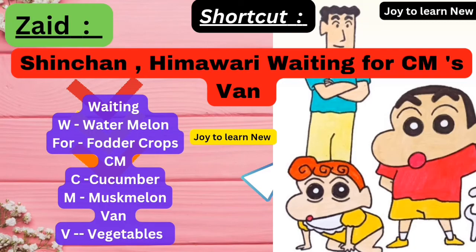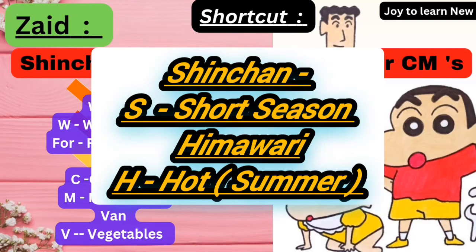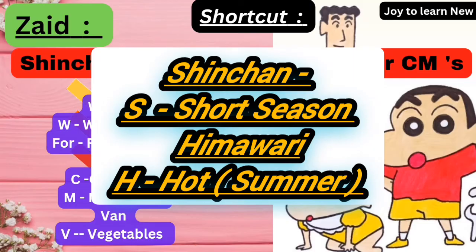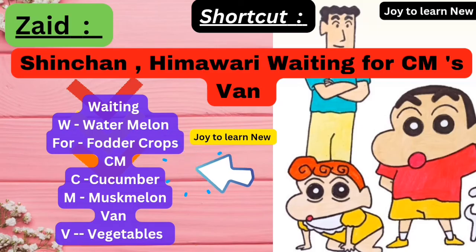Let's discuss about Zaid season. It is simple — remember the sentence 'Chinchang and Himawari waiting for CM's van'. Take the names Chinchang and Himawari. Chinchang's starting letter is S, which denotes short season. Himawari's starting letter is H, which denotes hot — meaning summer month. So Zaid season is a short season occurring during summer months. The next word, waiting — W represents watermelon.